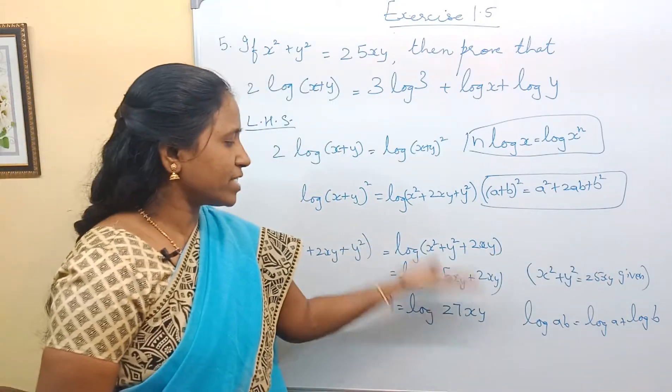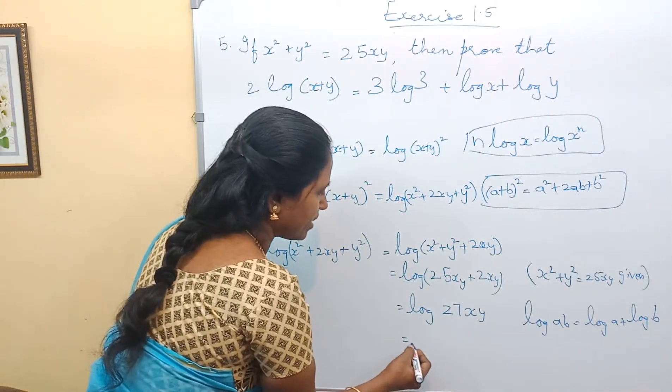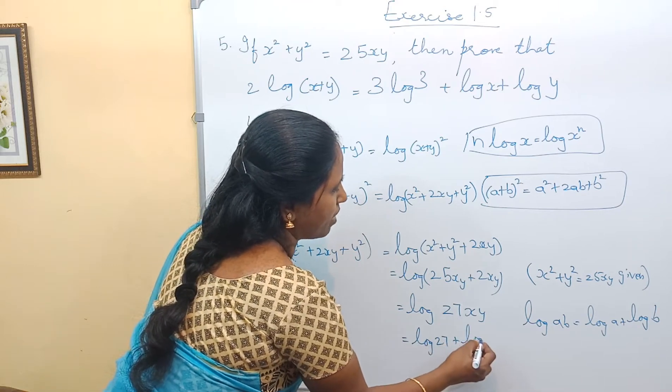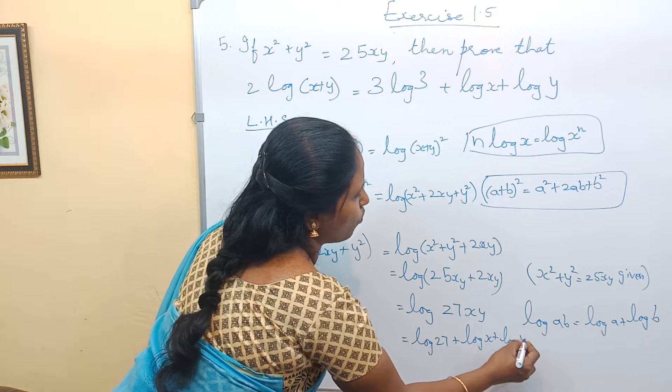So log(27xy), how can we write this? Log 27 + log x + log y. Now...